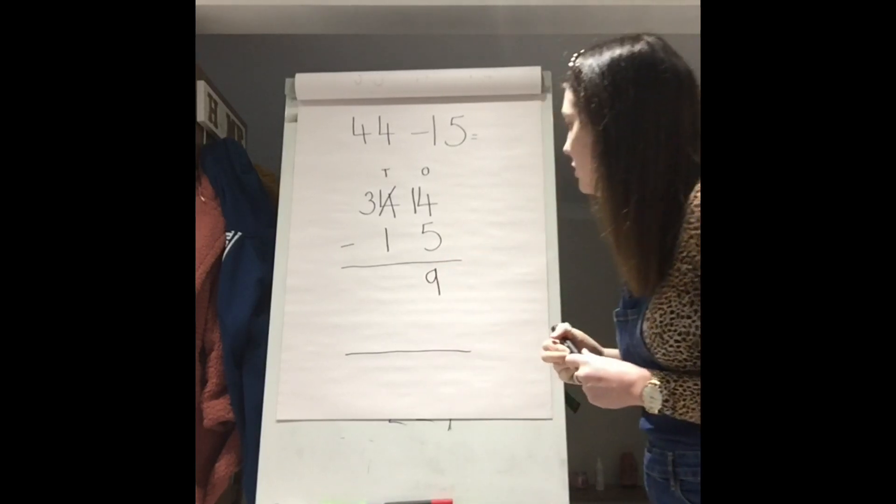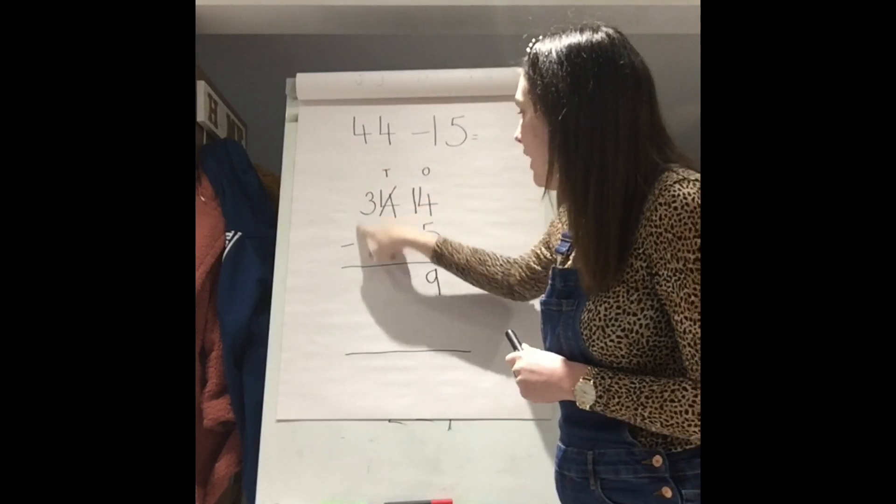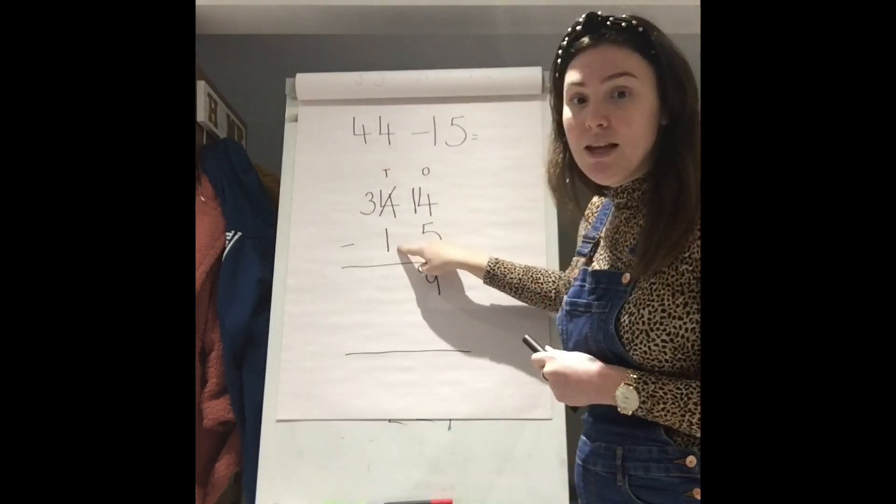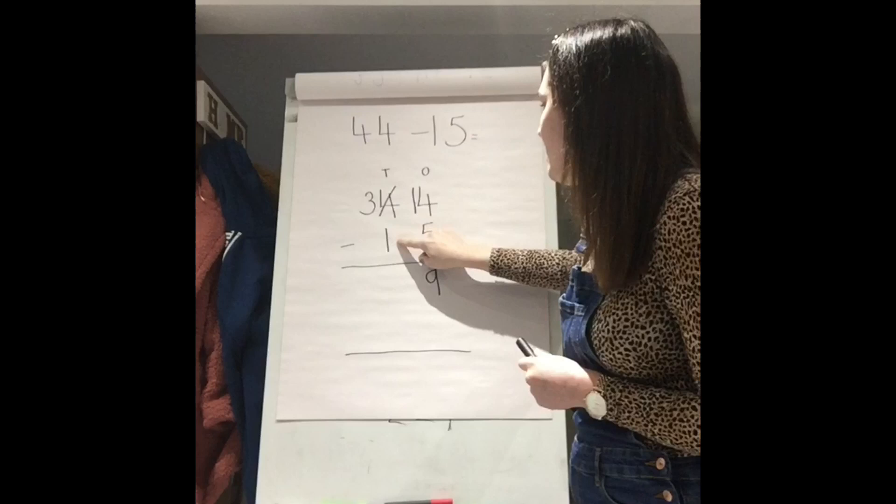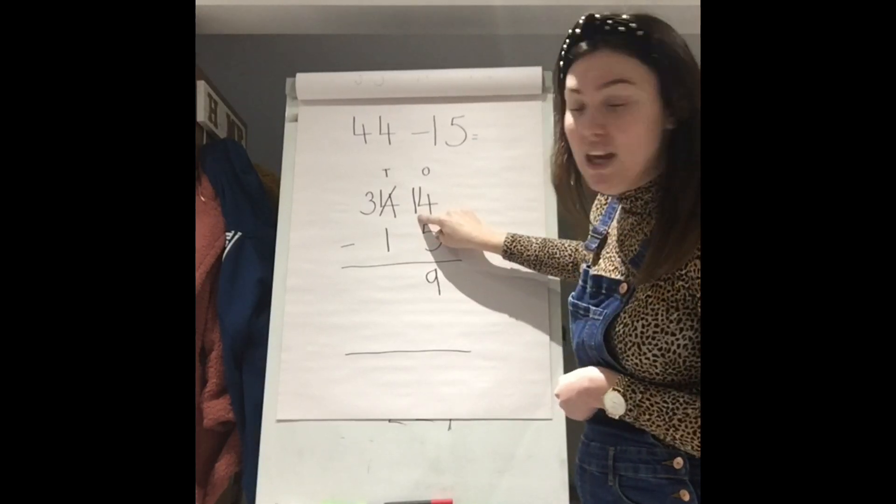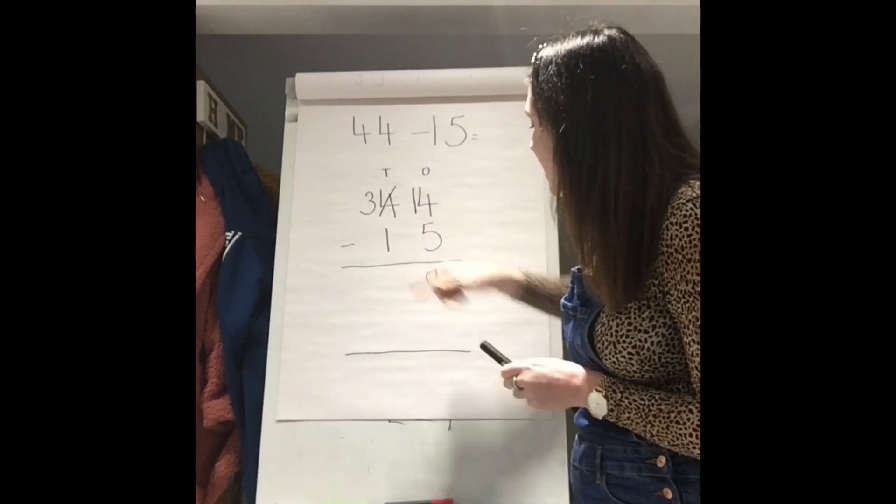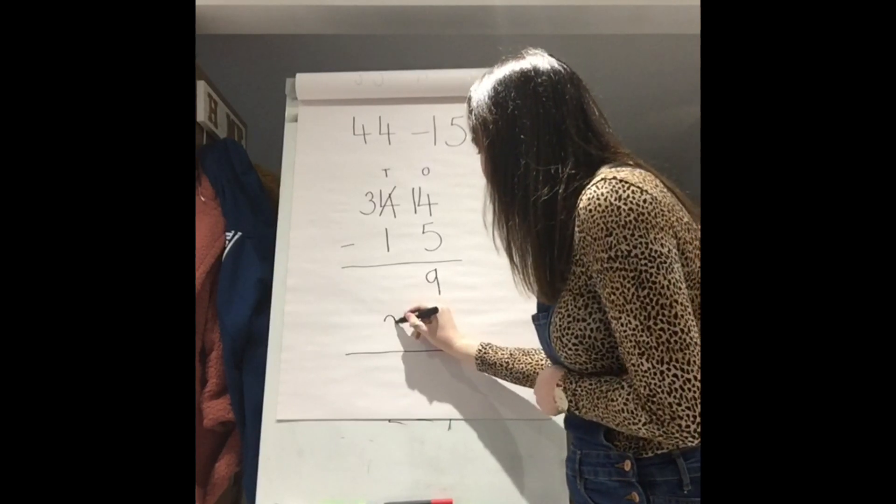Fantastic job. Now, we have to work out our 10s column and it's not 40 take away 10 anymore, it's 30 take away 10 because our other 10 is over here. So, 30 take away 10 is 20.